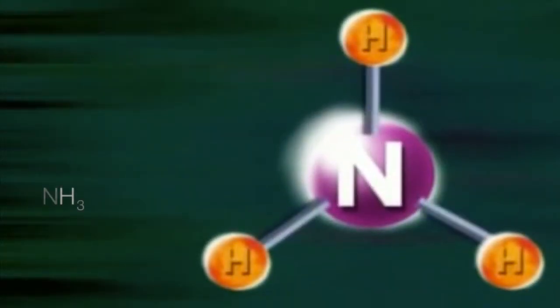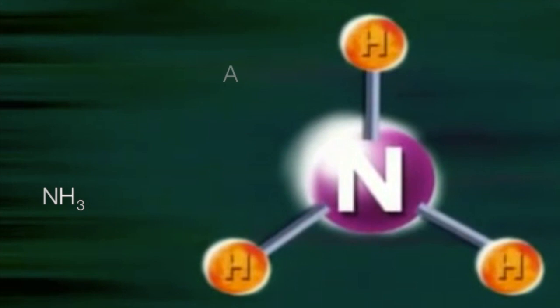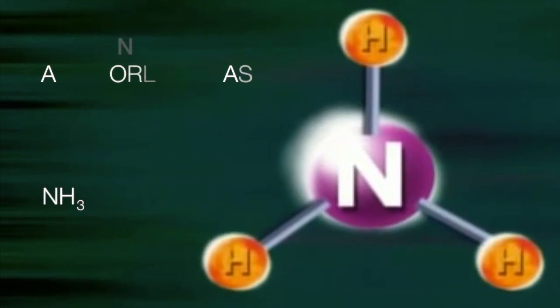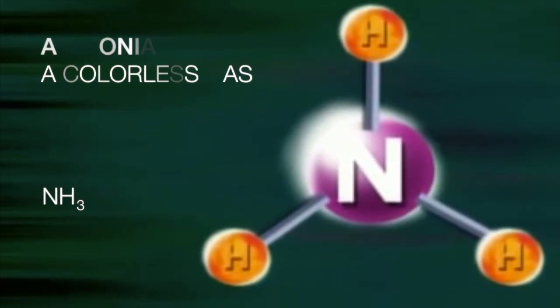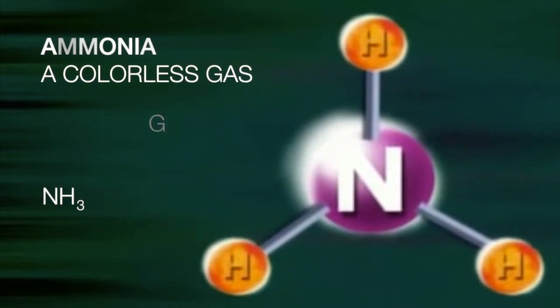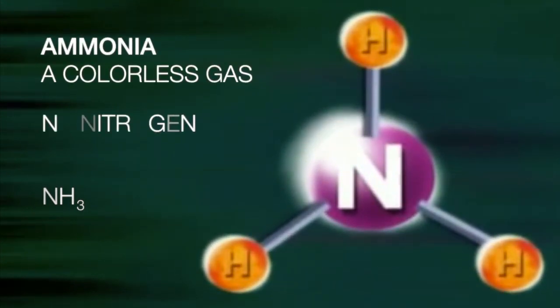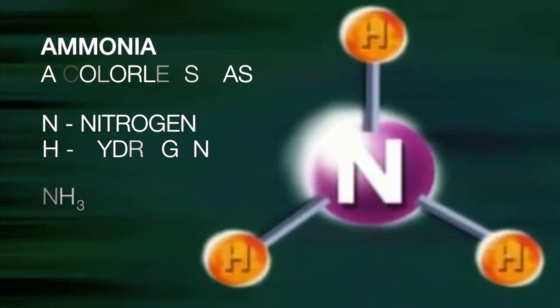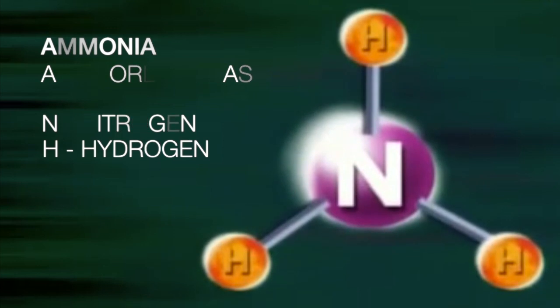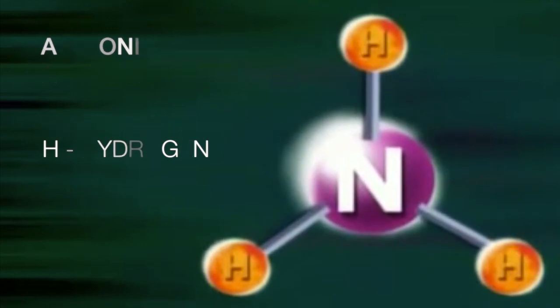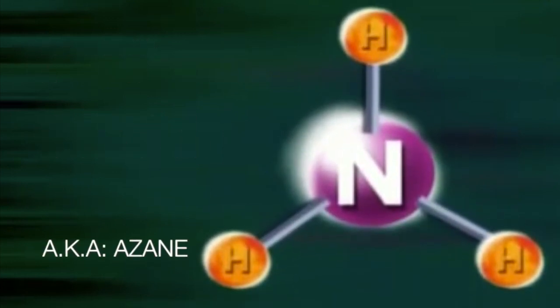NH3 is a chemical formula for the colorless gas ammonia, with N as nitrogen and H as hydrogen. It is a compound also known as a base.